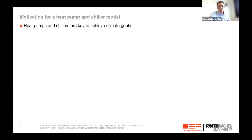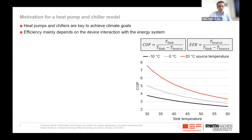Heat pumps and chillers are key to achieve the climate goals, and the efficiency of both devices mainly depends on the device interaction with the energy system itself. We can see this if we analyze the Carnot efficiency of heat pumps and chillers — temperature levels in the energy system mainly influence the efficiency. For example, if we can decrease the sink temperature in the heat pump, we can drastically increase the coefficient of performance.